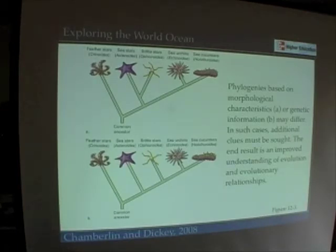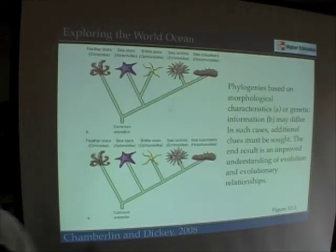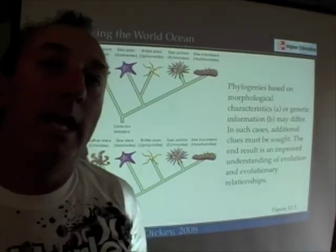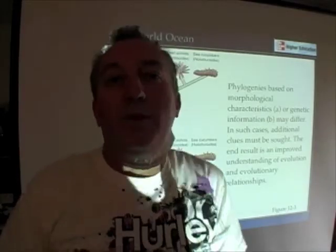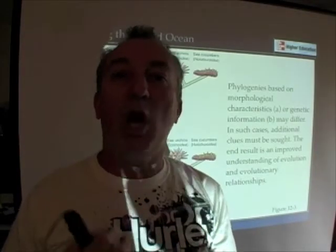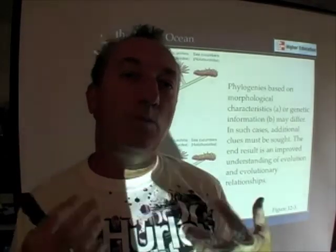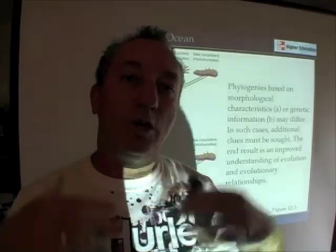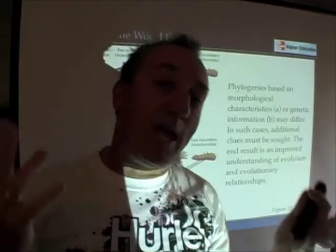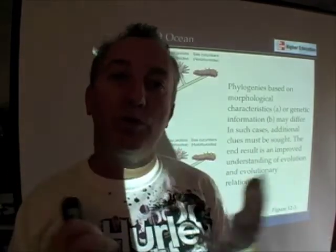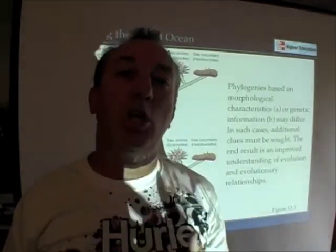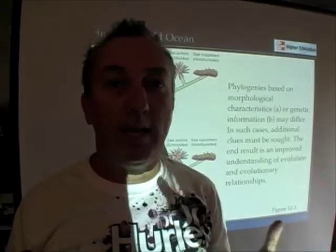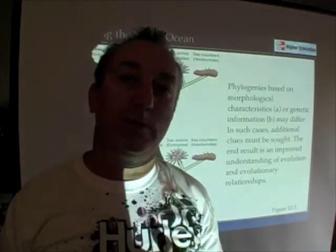The final, more modern way of doing it is simply to compare the genetic code or the genomes. All of us have essentially software in our cells that runs them and tells them what to do — software that codes for hair color, eye color, behavior patterns, and all sorts of different things. That genetic code can be read and compared with other organisms.